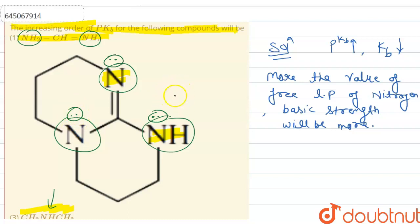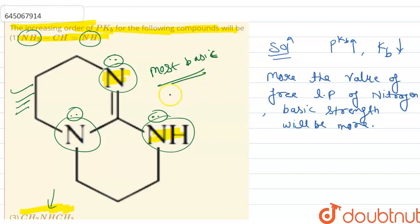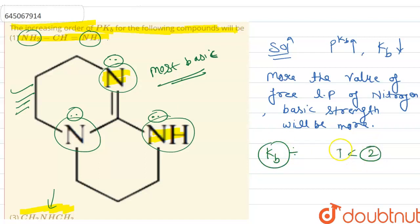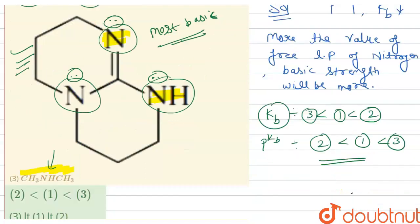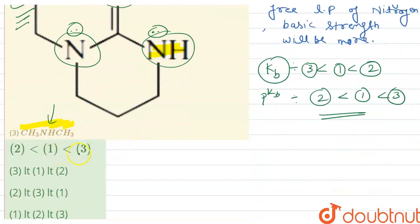So compound B, having three nitrogen atoms with three lone pairs, is the most basic compound. Then the compound with two nitrogen atoms is next. So the order of Kb is: compound 2, then compound 1, then compound 3. Therefore the increasing order of pKb is 2, 1, 3 — meaning option A is correct.